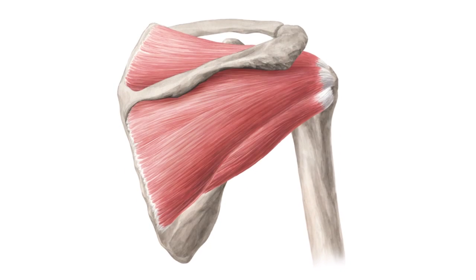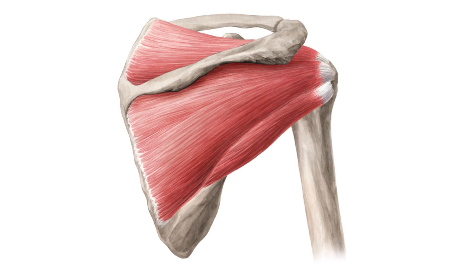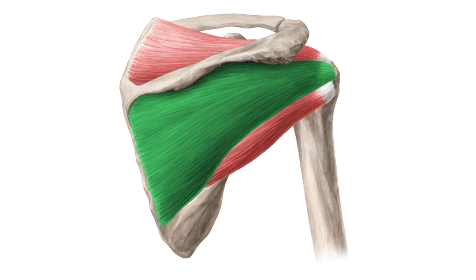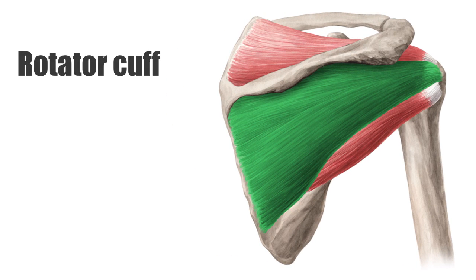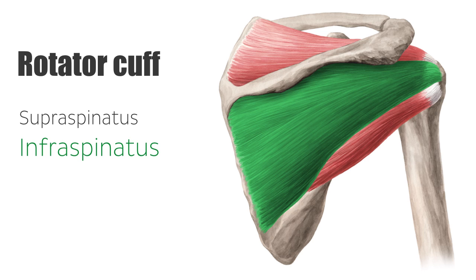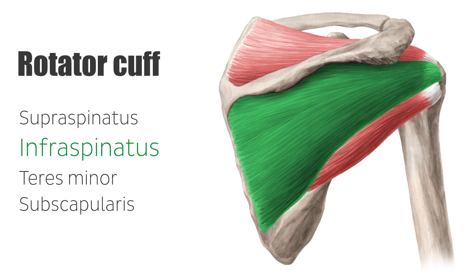In the human body, the rotator cuff is a functional anatomical unit located in the upper extremity. It consists of the following muscles: the supraspinatus muscle, the infraspinatus muscle, the teres minor muscle, and the subscapularis muscle.